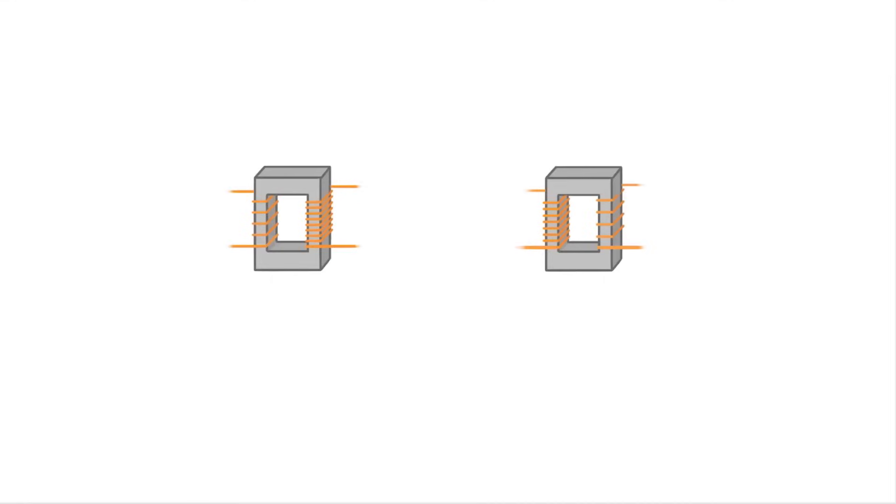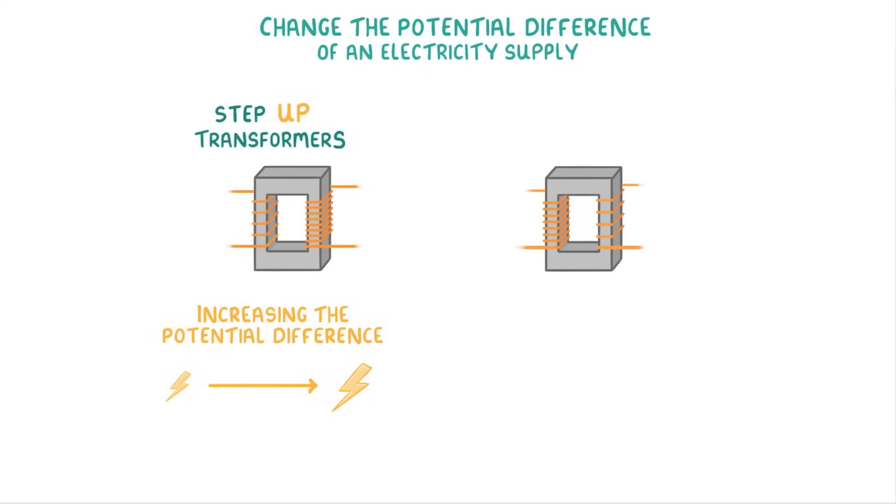As we saw in the last video, transformers are used to change the potential difference of an electricity supply. Step-up transformers increase the potential difference because they have more turns on the secondary coil than on the primary coil, and step-down transformers decrease the potential difference because they have less turns on the secondary coil.